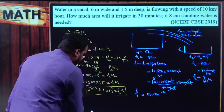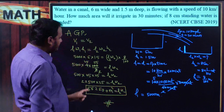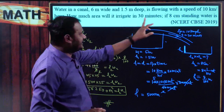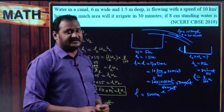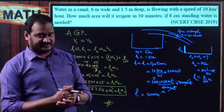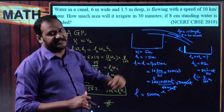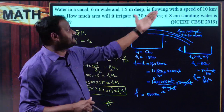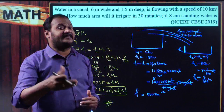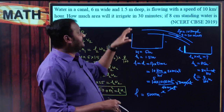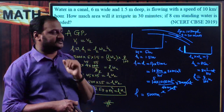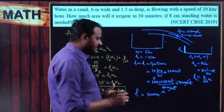So the area it irrigates in 30 minutes is 562,500 square meters. That is the area it will irrigate in 30 minutes when 8 centimeters of standing water is needed. The key idea is understanding that the distance traveled by the water within the given time is the length of the canal. Hope you understand the problem. Let us move on to the next problem.